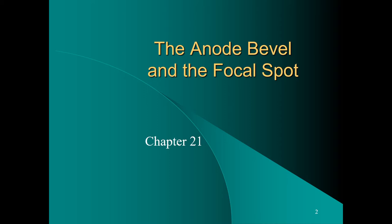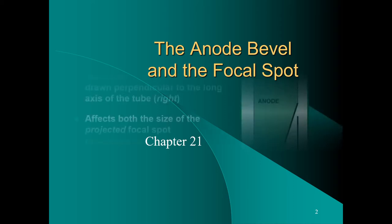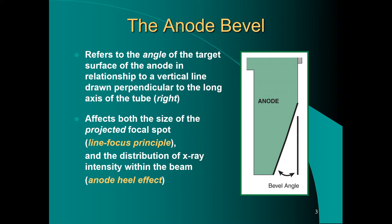These are things that we can adjust, we call these things variables. The anode bevel refers to the angle of the target surface of the anode in relationship to a vertical line drawn perpendicular to the long axis of the x-ray tube.